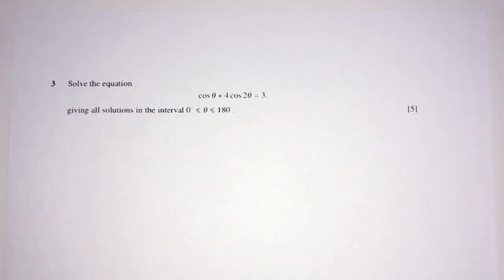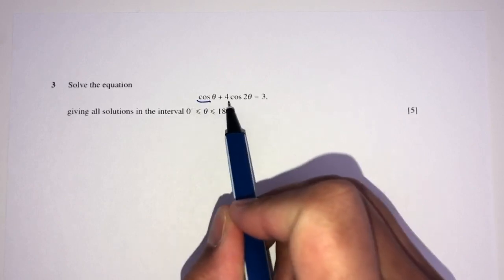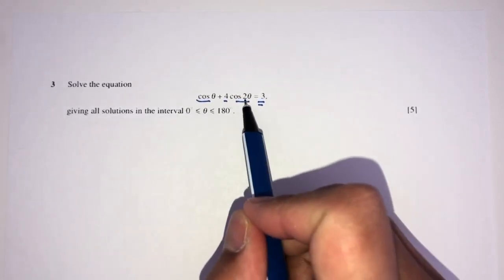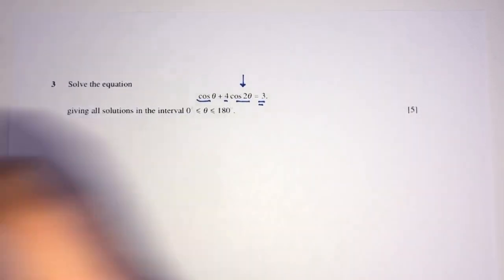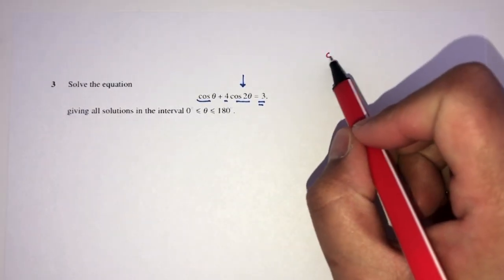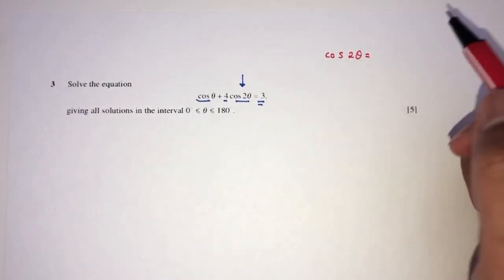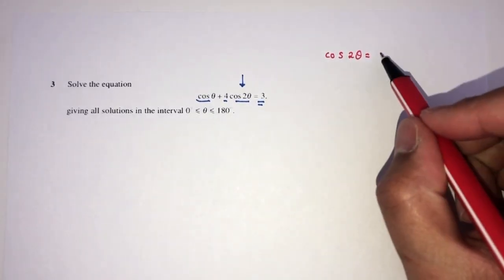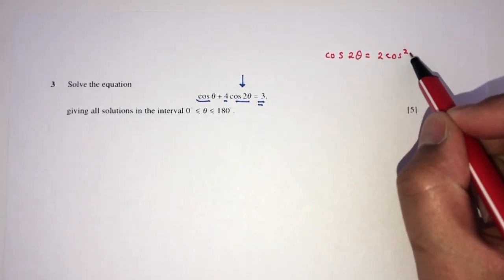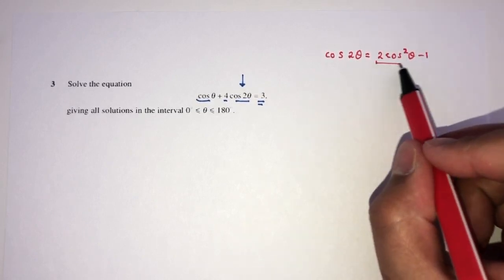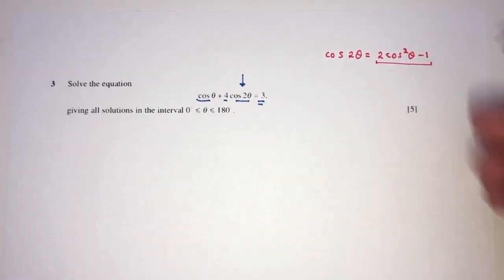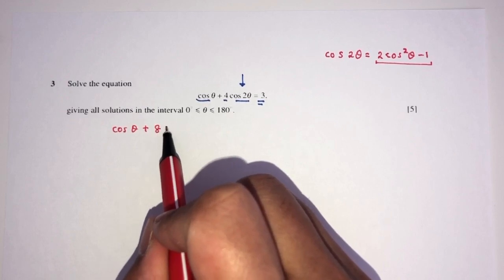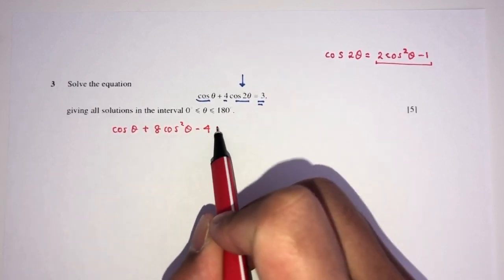Now let's move on to question number 3. We have to solve the equation cos(θ) + 4cos(2θ) = 3. We observe we have θ and 2θ, so we need to expand cos(2θ). Now, cos(2θ) equals 2cos²θ − 1. We choose this form because the equation is in terms of cos. So you will have cos(θ) plus 4 times (2cos²θ − 1), which gives 8cos²θ − 4, equal to 3.